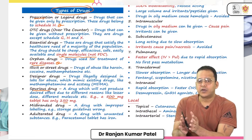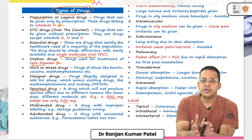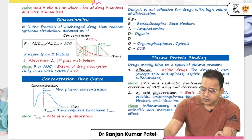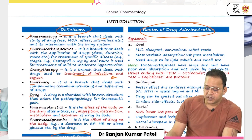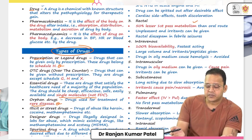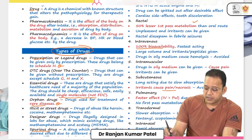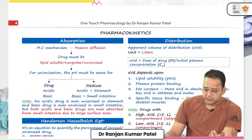For last-minute revision before NEET PG or FMGE, you don't need to read the entire book. Take one page and just go through the red points. For example, under routes of administration: rectal route has 50% lesser first-pass metabolism than oral; intravenous is the only route with 100% bioavailability; subcutaneous can cause pain and necrosis so it's avoided for certain drugs; pulmonary route has fast effect but IV is still faster.